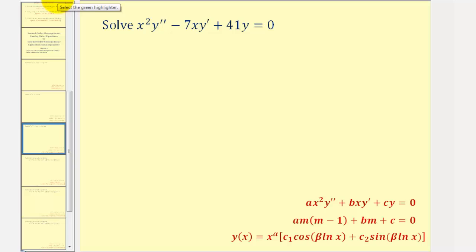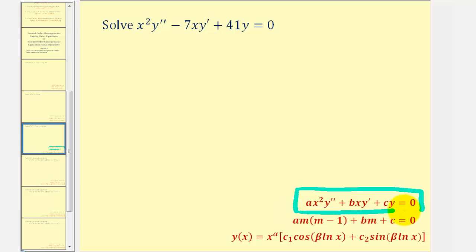But more importantly, because this differential equation fits this form, we have a Cauchy-Euler differential equation. For a Cauchy-Euler differential equation, for each term, the degree of the coefficient is equal to the order of the derivative.